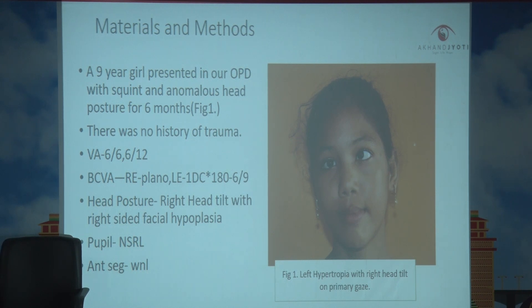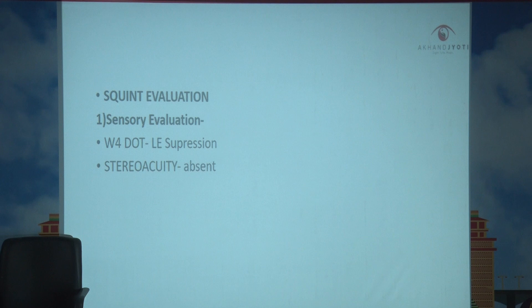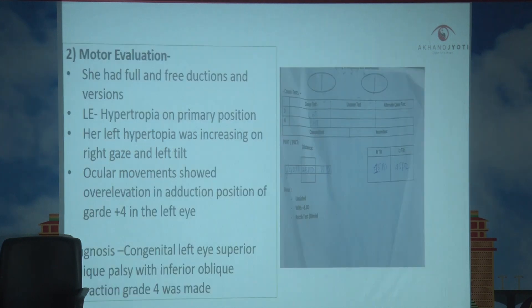This is the photograph of the girl. On squint evaluation, the Worth four dot test showed left eye suppression. Stereo acuity was absent. Motor evaluation showed full free ductions and versions.